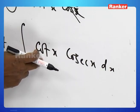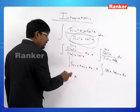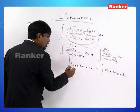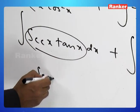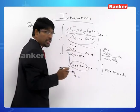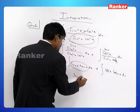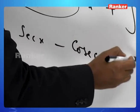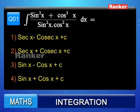The derivative of cosec x corresponds to cot x cosec x, and the derivative of sec x corresponds to sec x tan x. The integral of sec x tan x is sec x, whereas the integral of cot x cosec x is minus cosec x. So the answer is sec x minus cosec x plus c. Therefore, option one is correct.